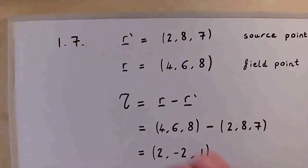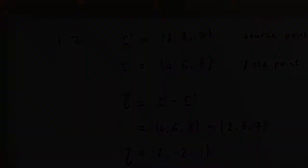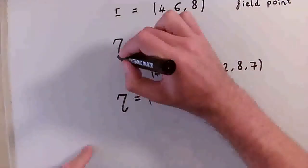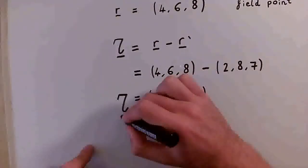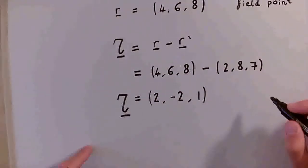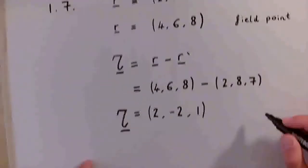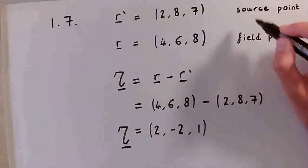So this is our separation vector. I'll just make sure that the separation vectors are underlined to show that it is in fact a vector quantity pointing from the source to the field point.